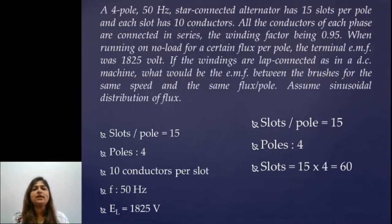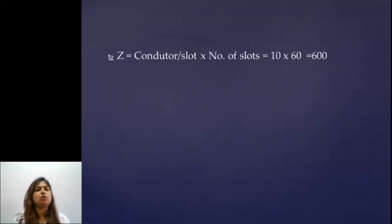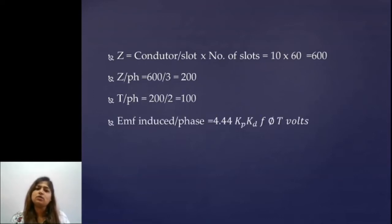To substitute in EMF equation you need phase value. We will find phase value by dividing line value by root 3. Next step is to find total number of conductors or turns per phase. Total conductors are 10 into 60 equals 600. Conductors per phase is 600 by 3 equals 200 and turns per phase will be 200 by 2 which is 100.